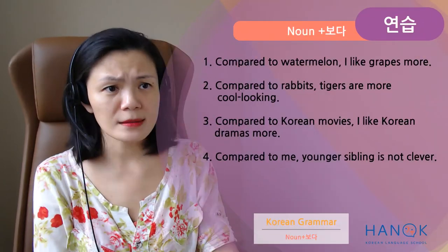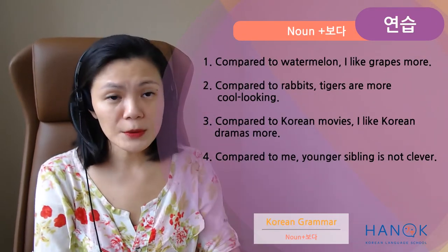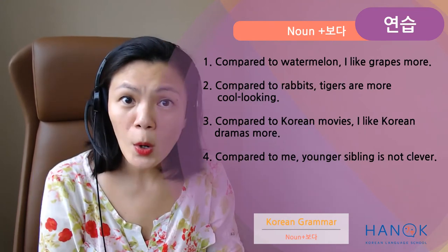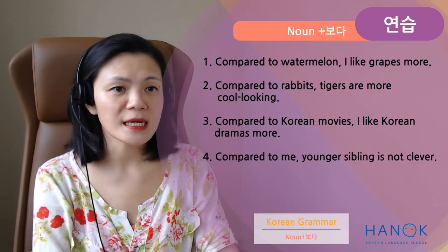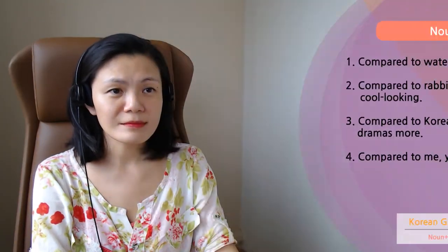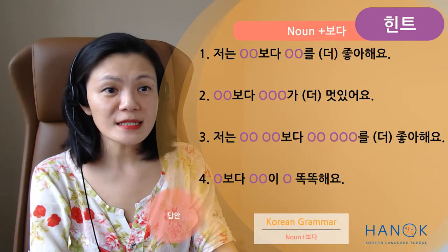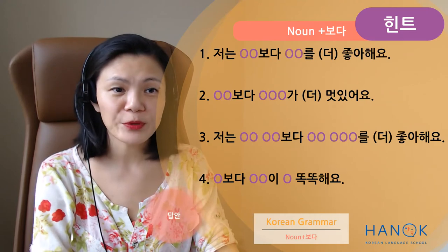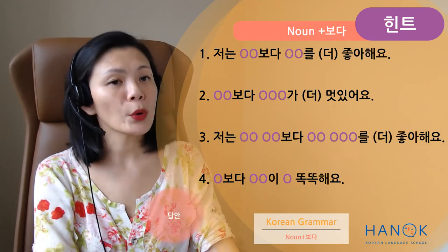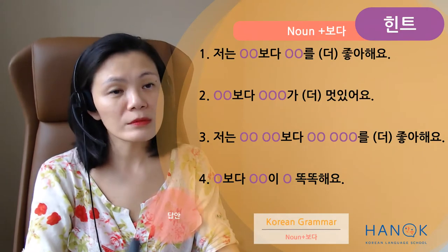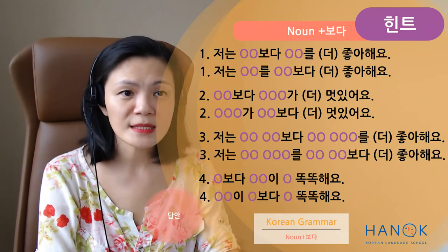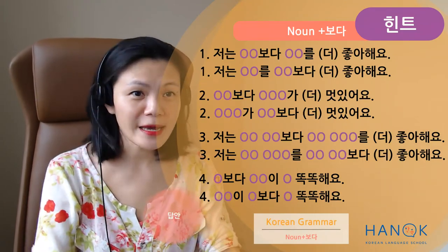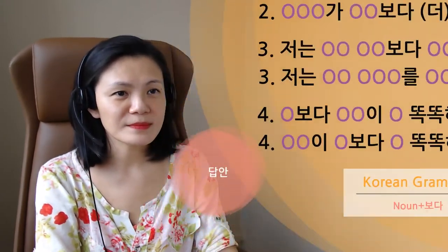그럼 우리 practice — 연습 합시다. Let's practice. Pause the video — 비디오를 멈추세요 — 그리고 쓰세요, write this down. 번역 해보세요 — translate this. Always try. 힌트 나와요 — hints are coming. Most of the sentences are there, just fill in the blanks. 해보세요. You can write it either way — both are fine. Again, I would recommend the first structure. 비디오를 멈추세요, 생각해보세요 — always try.